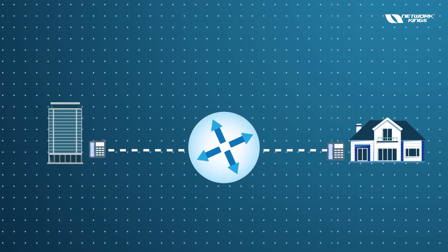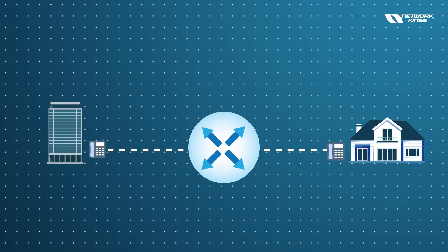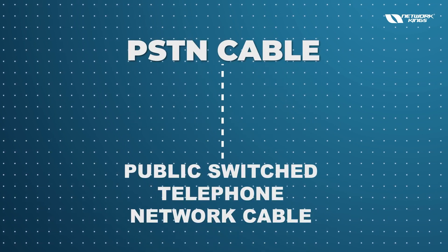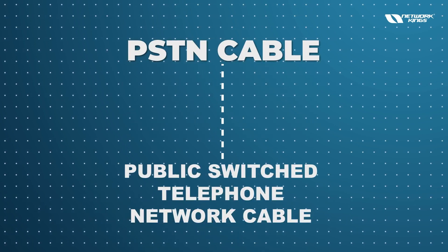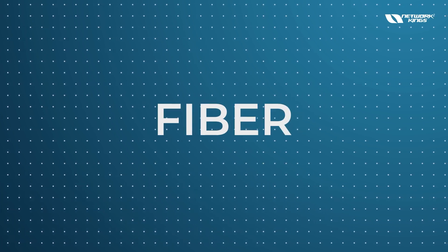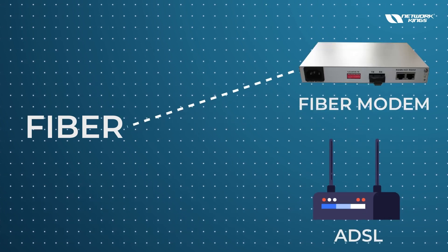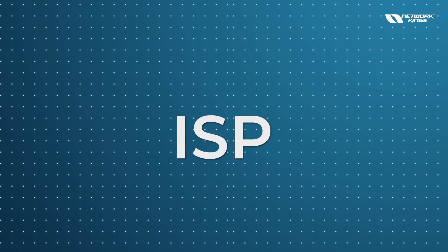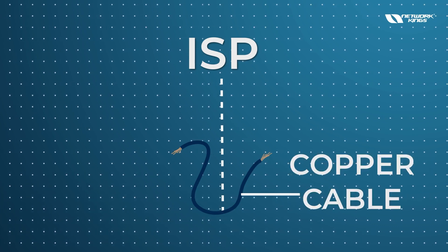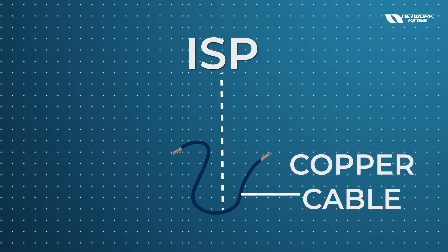ADSL is required when you are getting connectivity in the form of either a PSTN cable — Public Switch Telephone Network cable — or in the form of fiber. When you are going to get fiber connectivity, we are going to use fiber modems. Sometimes ISPs also give direct Ethernet or copper cable connectivity, but that is not common.